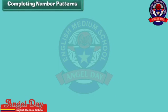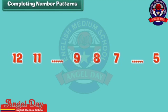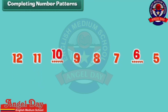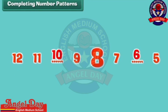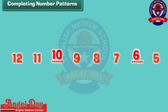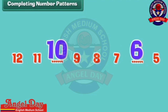Completing number patterns. Look at this number pattern. There are two numbers missing in the pattern. We can fill them if we understand how the pattern has been created. It is clear that in this pattern, numbers decrease by one at a time. We can find the missing numbers with the help of reverse counting: twelve, eleven, ten, nine, eight, seven, six, five. So the missing numbers are ten and six.